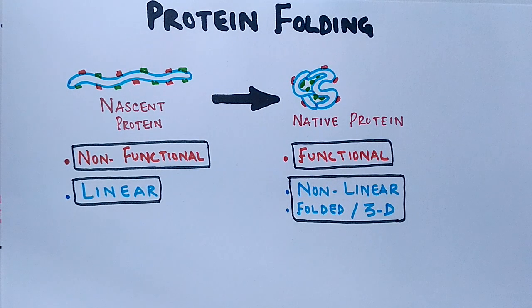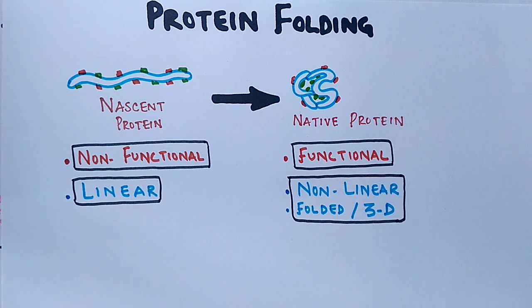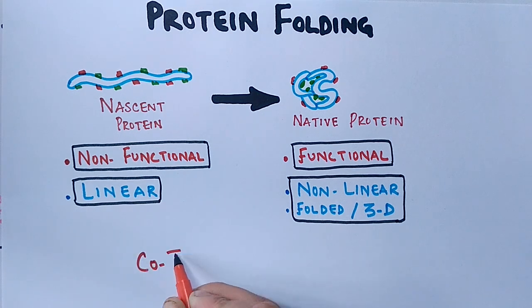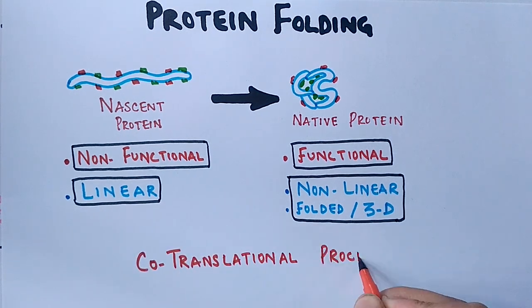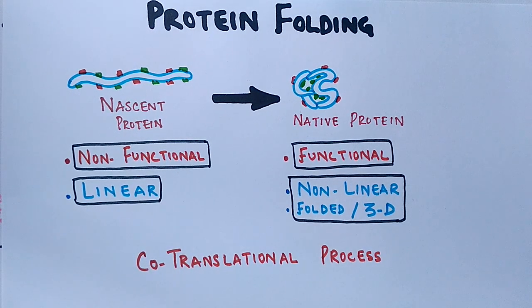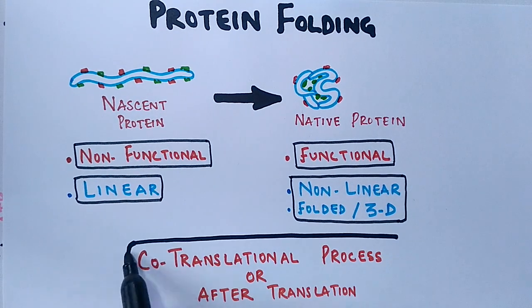The three-dimensional tertiary structure defines the function of the protein. It must also be noted that protein folding is either a co-translational process or it occurs after translation.